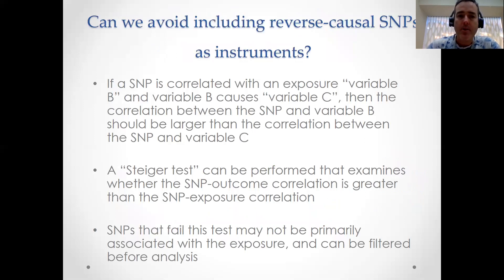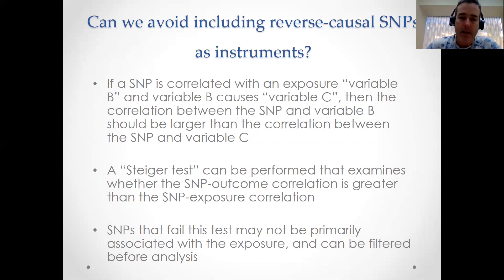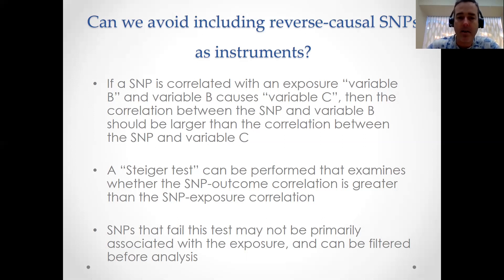What can we do to avoid including reverse causal SNPs as instruments in an MR analysis? There is a simple procedure. The rationale goes something like this: if a SNP is correlated with an exposure — let's say variable B — and variable B causes variable C, then the correlation between the SNP and variable B should be larger than the correlation between the SNP and variable C. You can construct a test statistic to test whether that's the case, and it's called a Steiger test.